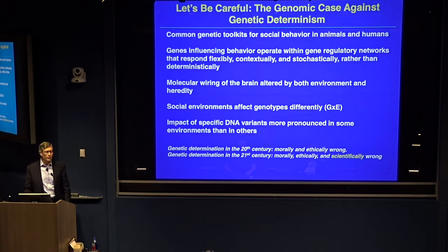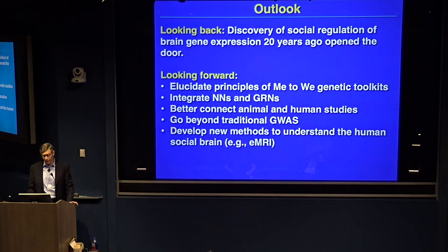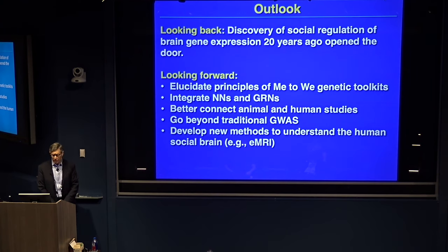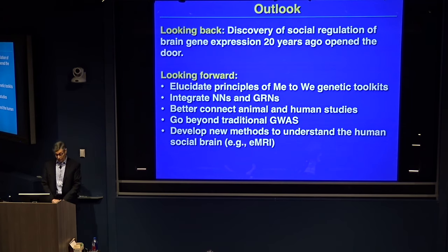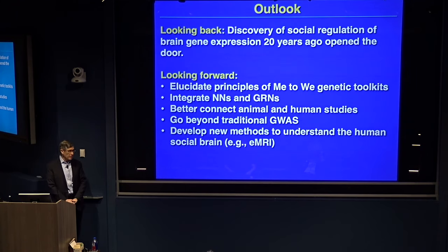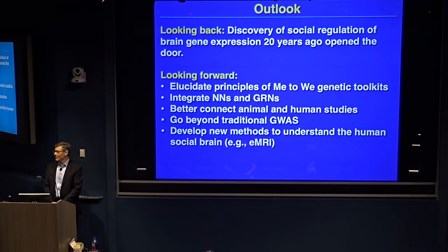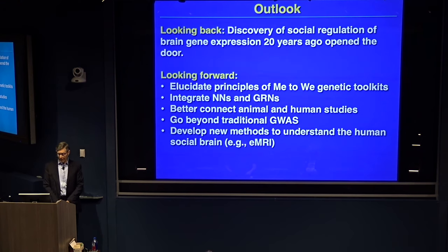Looking back, this was made possible by the discovery of social regulation of brain gene expression over 20 years ago, which opened the door. Looking forward, it will be important to elucidate principles of me-to-we genetic toolkits, better integrate neuronal networks and gene regulatory networks, better connect animal and human studies — which are largely siloed with respect to genetics — go beyond traditional GWAS to include the environment in human behavior genetics studies, and develop new methods to understand the social brain.